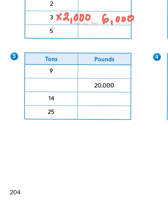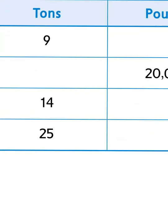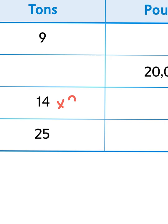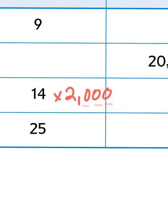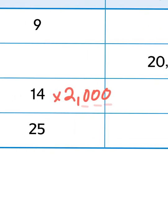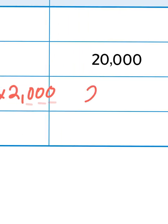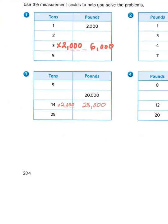Same would be true for 14 tons. If I have 14 tons and I multiply it by 2,000, or 2 with 3 zeros behind it, all I have to do is multiply 14 times 2 and then add 3 zeros to the end. Well, 10 times 2 is 20, 4 times 2 is 8, 20 plus 8 is 28, so my total would be 28,000 pounds for 14 tons.